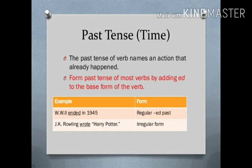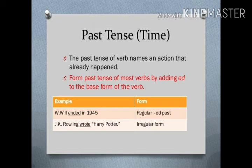Past tense: the past tense of a verb names an action that already happened — matlab, jo ho chuka hai. We form the past tense of most verbs by adding 'ed' to the base form of the verb. For example, 'World War II ended in 1945' — here 'ended' is the verb with 'ed' added. J.K. Rowling wrote Harry Potter — here 'wrote' is in irregular form, meaning the word has changed completely from 'write' to 'wrote'.